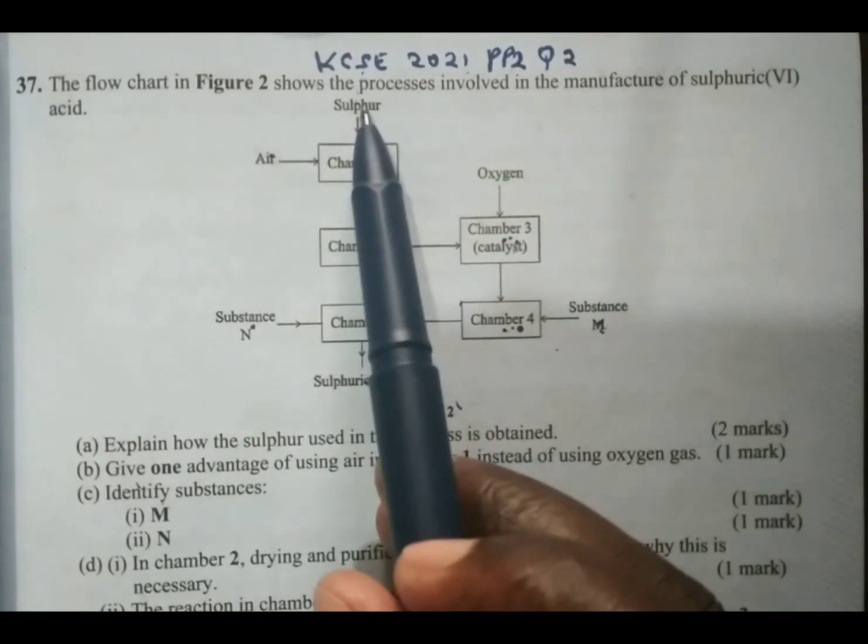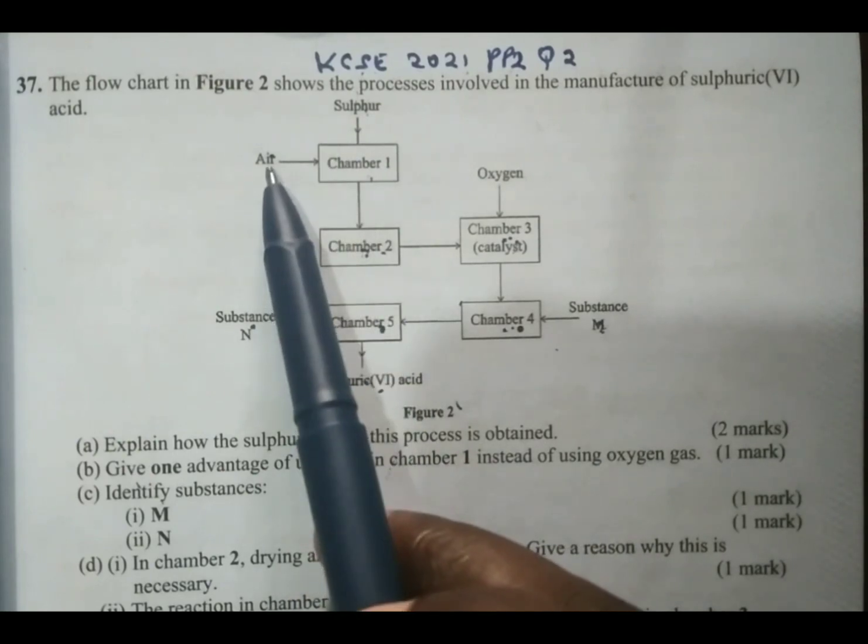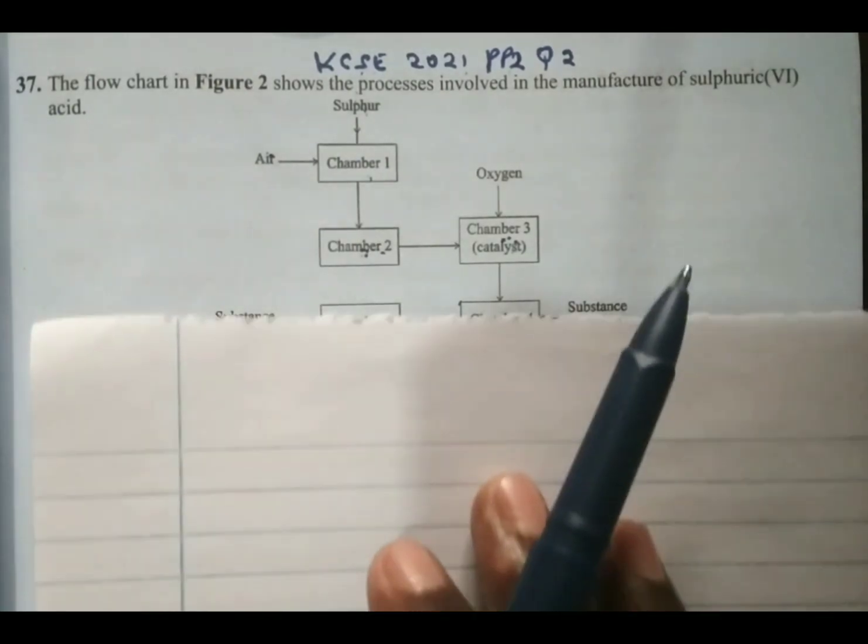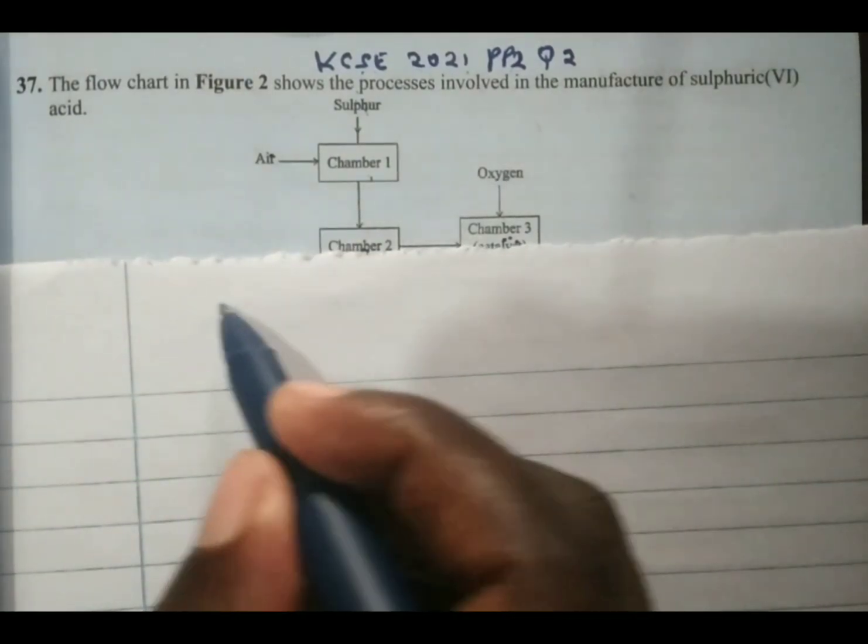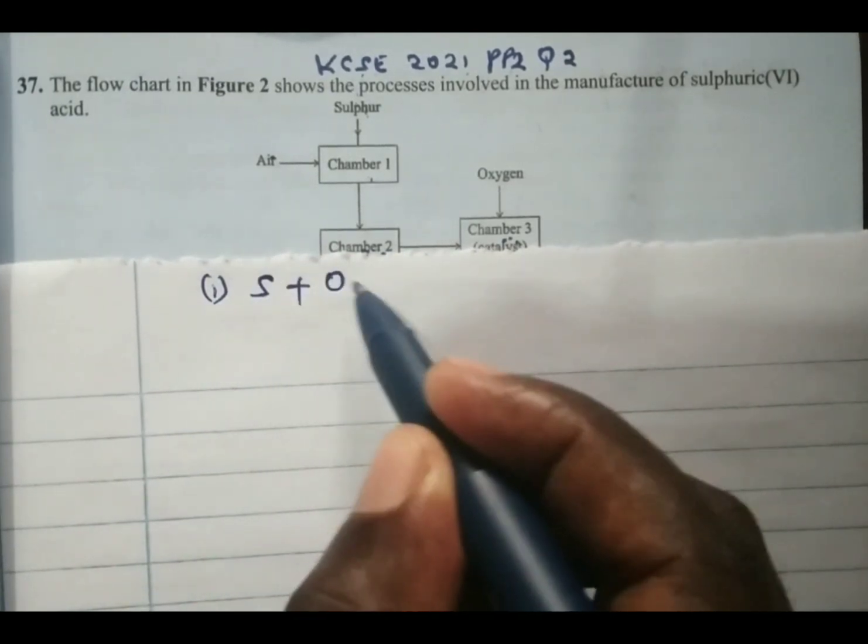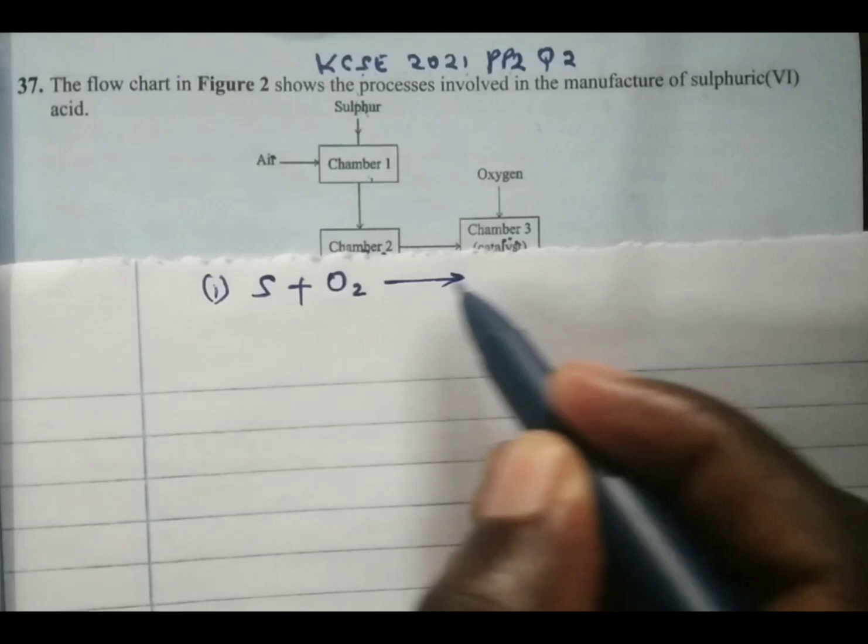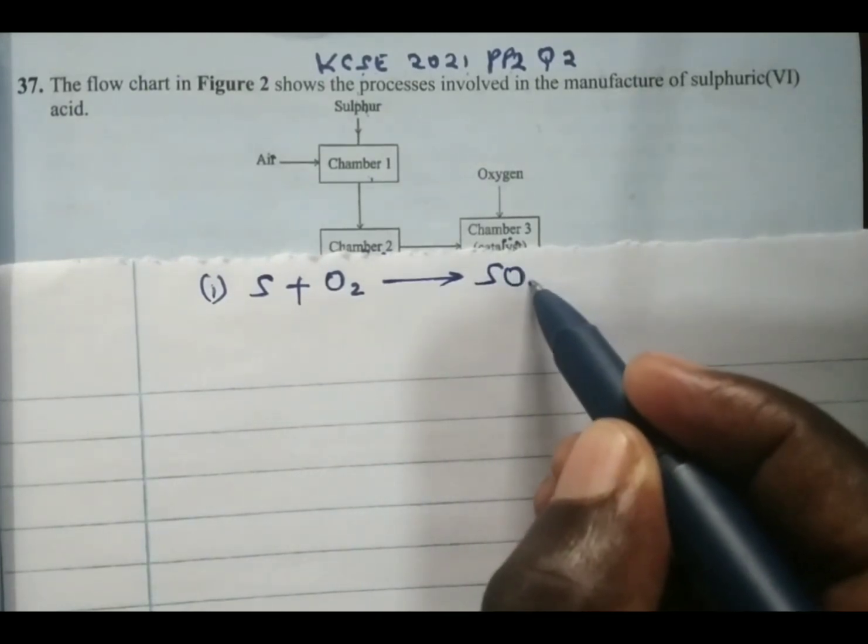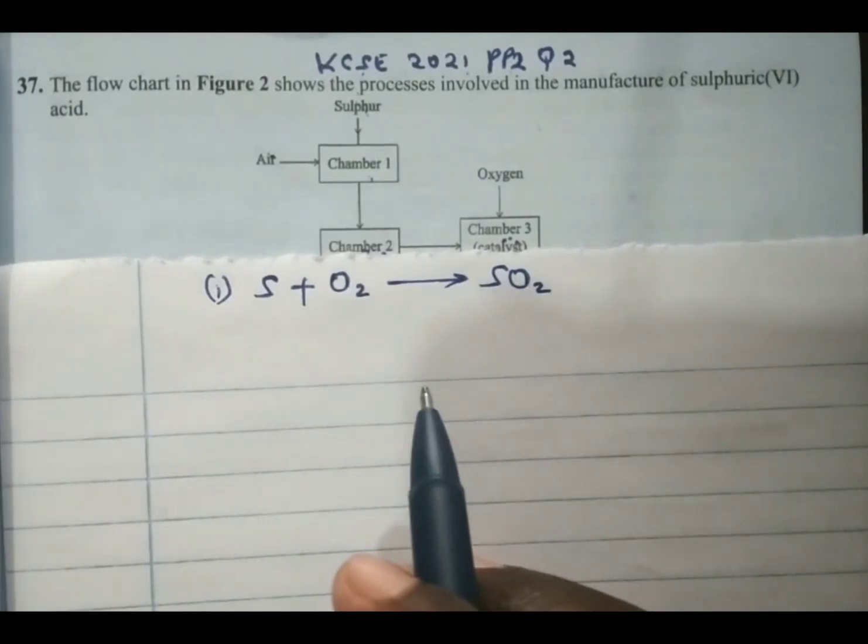In chamber 1, we have sulfur and air reacting. We have sulfur reacting with air to give us sulfur dioxide, which is a gas.